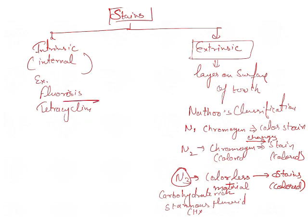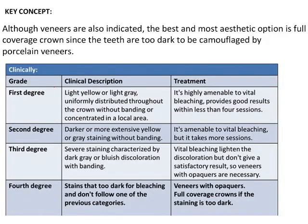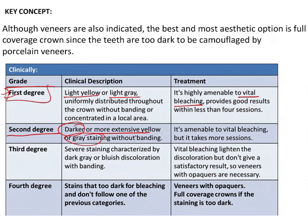Tetracycline stains are clinically divided into four categories. First degree shows light yellow or light grayish color and can be treated with vital bleaching, which provides good results. Second degree is darker or more extensive yellow or gray staining without banding. It can also be treated with vital bleaching but requires more sessions.